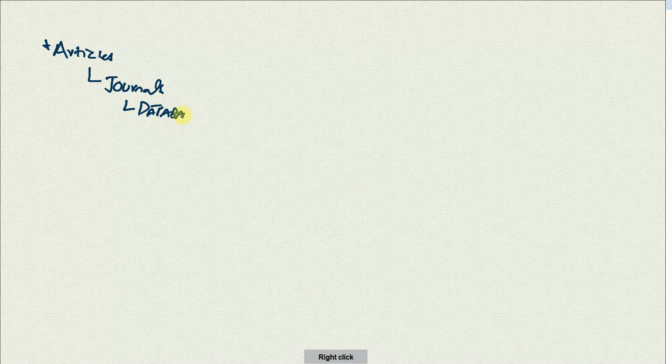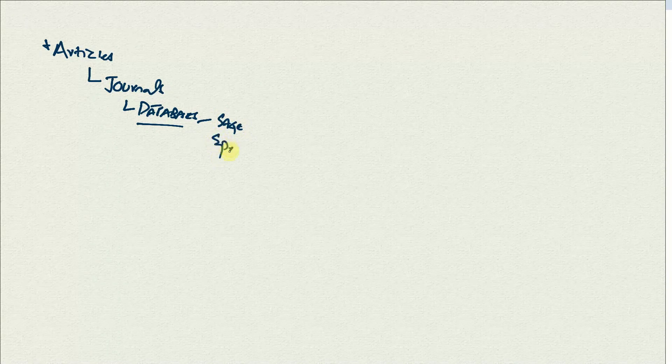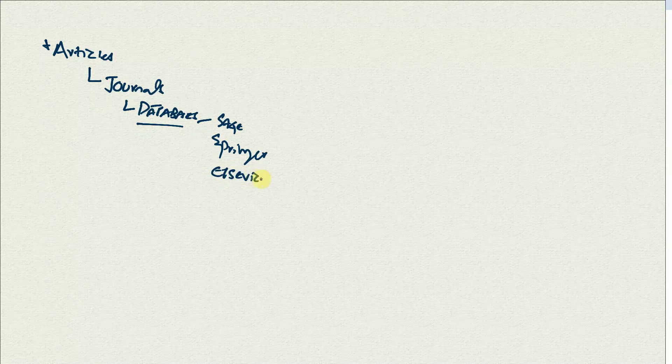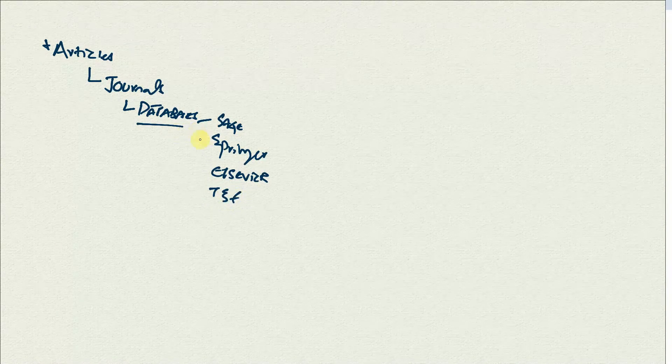In the last session we talked about journal articles that are published in journals, and the journals are published by different databases. There are different databases — some of them are good quality databases while others are not. We've already discussed Sage, Springer, Elsevier, Taylor and Francis, and others. The list will be shared in the description.